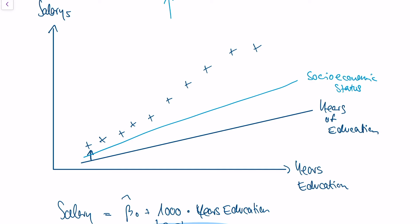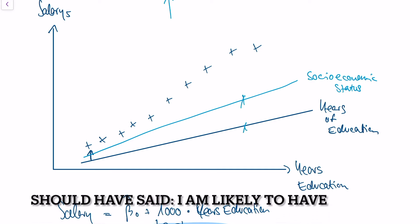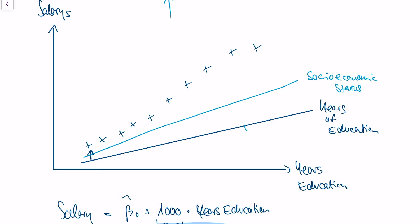And we know that if I have high years of education, I will also have high socioeconomic status. So the salary that we in fact observe is the sum of both of those effects. We have the effect coming from socioeconomic status, which influences my salary five years after my graduation, and we have the years of education.